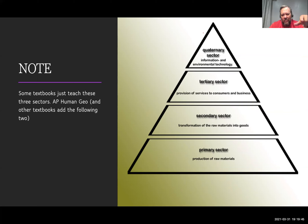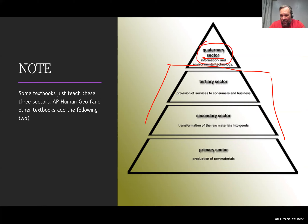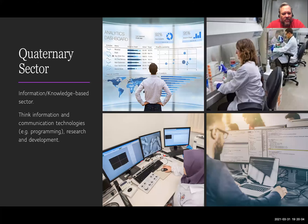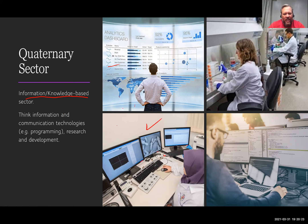AP Geography also uses the terms quaternary and quinary. The quaternary sector is an information- or knowledge-based sector — think computer programmers, researchers with advanced degrees, data analysts, and research and development work. It requires a high level of knowledge and technology.